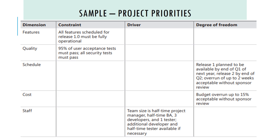For quality, 95% of user acceptance tests must pass. Quality is also a fixed constraint. This is basically how you define project priorities across 5 dimensions.